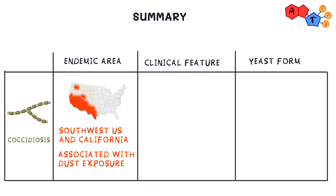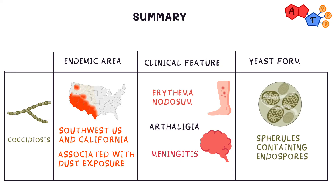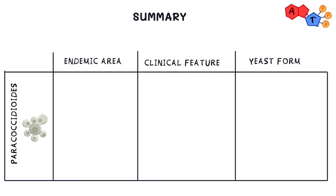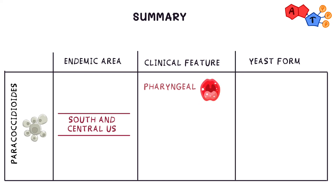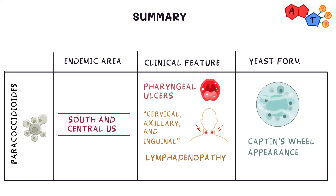For coccidioides: endemic in the southwest US and California, associated with dust exposure, clinical features include erythema nodosum, arthralgia, and meningitis, with yeast form as spherules containing endospores. For paracoccidioides: endemic in South and Central America, clinical features include pharyngeal ulcers and lymphadenopathy involving cervical, axillary, and inguinal nodes, with yeast form showing a captain's wheel appearance. Remember the unique yeast form appearance and important associations for each fungus.